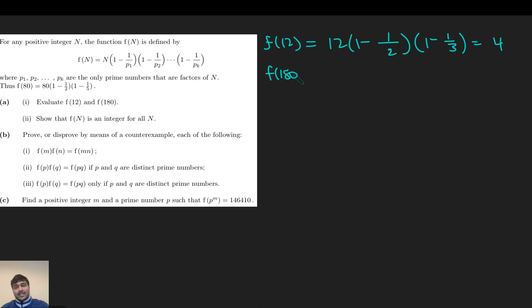What about f(180)? Similar thing. It's not too difficult to find the primes that divide 180: 2, 3, and 5. So it'll be (1 minus 1/2)(1 minus 1/3)(1 minus 1/5), and if you work all this out, it turns out to be 48. There will be very little marks awarded for this part. This is more just for you as the student to go, OK, cool, this is what's happening with this function.